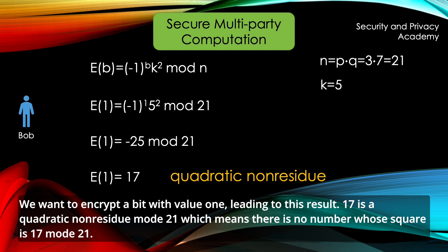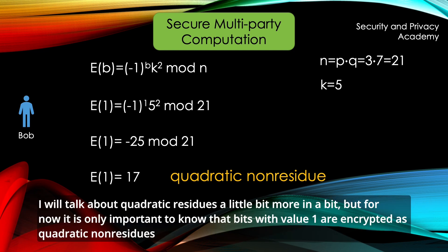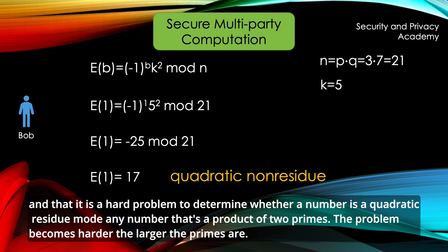17 is a quadratic non-residue, mod 21, which means there is no number whose square is 17, mod 21. I will talk about quadratic residues in a little bit, but for now it's only important to know that bits with value 1 are encrypted as quadratic non-residues and that it is a hard problem to determine whether a number is a quadratic residue, mod any number that's a product of two primes.